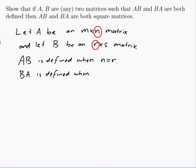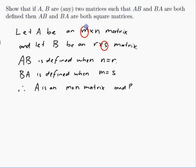And BA is defined when, well that would be the other way around, it would be the middle two numbers with B first and A next. So that would be s and m. So when m equals s. Therefore, A is an m by n matrix and B is an n by m matrix, since r is n and s is m.